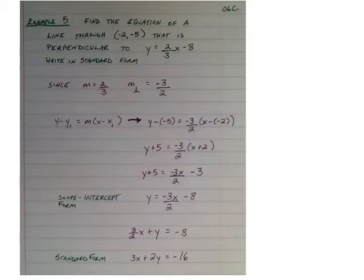From there, it's a process of slowly building up to the standard form. So first I combined the negatives to make a plus. Then I distributed the negative 3 halves in. And then from there, I subtracted 5 from both sides. And here we have our slope-intercept form, but it asks us to find standard form.